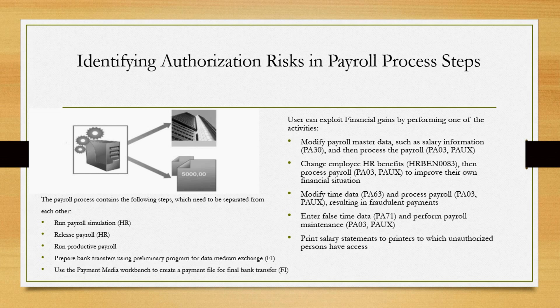A user can modify payroll master data such as salary information by performing PA30, and then process payroll by performing PA03 and PA UX. Similarly, a user can change employee HR benefits and then process payroll again to improve their own financial situation. A person can modify time data using PA63 or enter false time data using PA71. Additionally, a person can print salary statements to printers to which unauthorized persons have access.